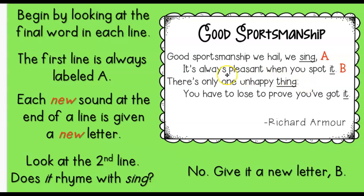They've underlined the end words. The first line is always going to be labeled A. In any poem, when you're either creating a poem and we're going to use a rhyme pattern, or if you're trying to identify this pattern, the last word of the first line will always be labeled A. Each new sound at the end of a line is given a new letter. Well, we have sing and it — does sing and it rhyme? No. So we're going to label it the letter B, because it does not rhyme with sing.